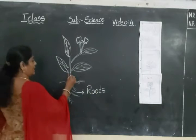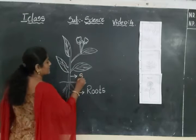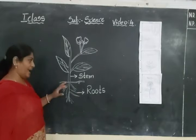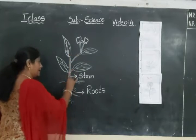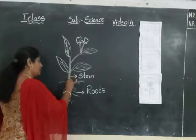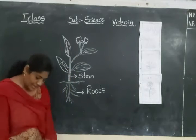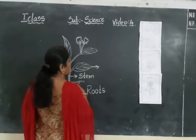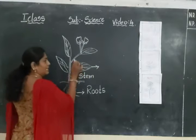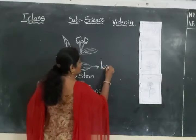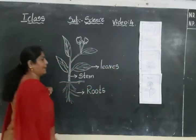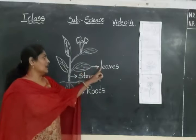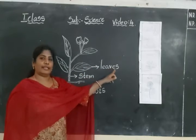Next thing, this is the stem. What do you call this one? This is the stem of a plant. S-T-E-M. Stem. You are having a trunk, in the same way this plant is having a stem. These are leaves. Do you know this one? These are leaves of a plant. L-E-A-V-E-S. Leaves.